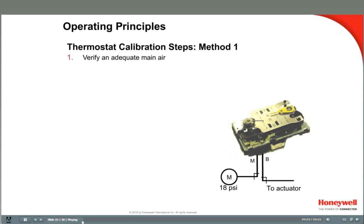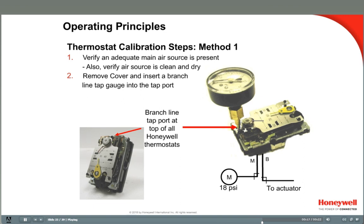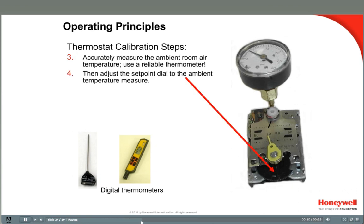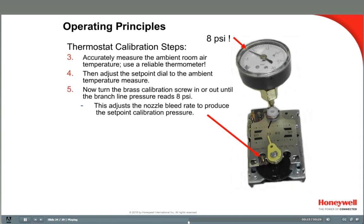Here are the steps to calibrate. Step 1: verify the main air supply at the stat — main air pressure may vary around the building due to pressure drops, but should remain somewhat constant at a given location. Step 2: remove the cover and insert a branch line tap gauge into the tap port at the top of the stat. Step 3: measure the ambient room temperature with a reliable thermometer — do not use the built-in thermometer on the thermostat. In this example, the room temperature is 70 degrees. Step 4: turn the set point dial to the ambient temperature. Step 5: adjust the small brass calibration screw to get a reading of 8 psi on the branch gauge.